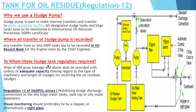Now, where does this regulation apply? To whom is the sludge tank regulation required? Basically, if your ship is 400 GT and above, it should have an adequate capacity sludge tank. This is mentioned in Regulation 12 of MARPOL Annex 1, which talks about the sludge tank capacity and oil residue tanks.